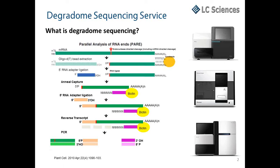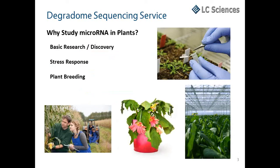Degradome sequencing provides a comprehensive means of analyzing patterns of RNA degradation. It has been used to identify microRNA cleavage sites, because in plants, microRNAs can cause endonucleolytic cleavage of mRNA by extensive and often perfect complementarity to mRNAs. When matched with microRNA sequencing data, degradome sequencing has revealed many known and novel plant microRNA targets.